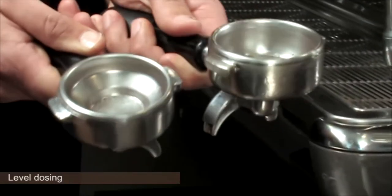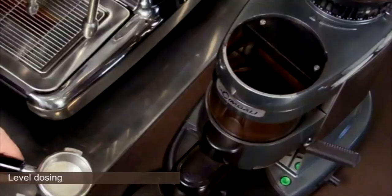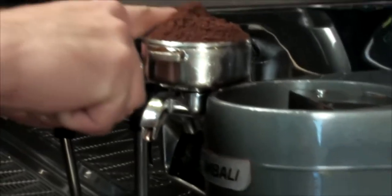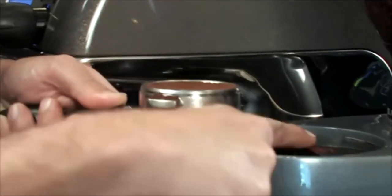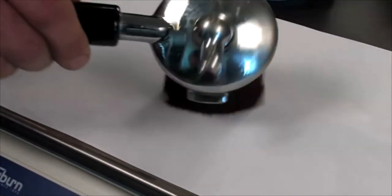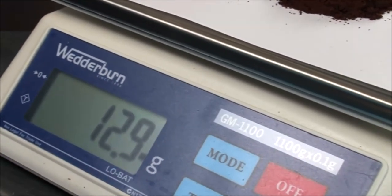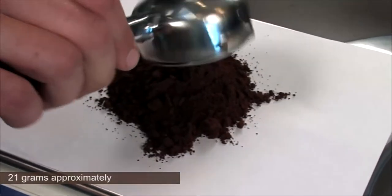Level dosing uses a slightly different principle. But basically, you need to dose the coffee into the portafilter and then level straight across. I'll only show you once because it's the same principle for each. Dose the coffee into the portafilter. Overdose it. Put the straight finger straight across. A single basket leveled should be between 12 and 14 grams. The weight for a mountain dose for a double shot should be around about 21 grams.